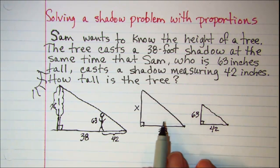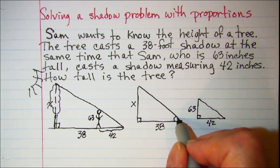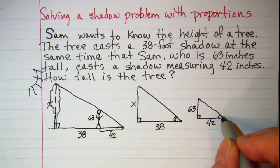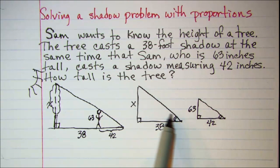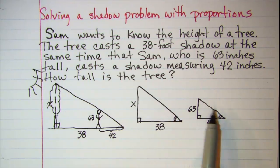Notice on these two triangles, they both share this angle that the sun rays make with the ground. So we have similar triangles here.